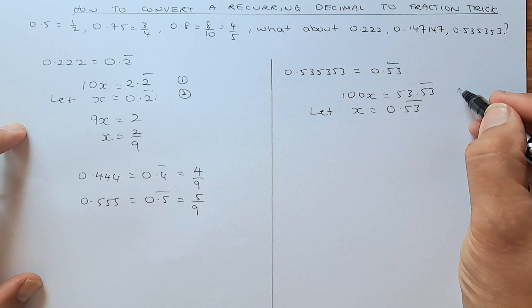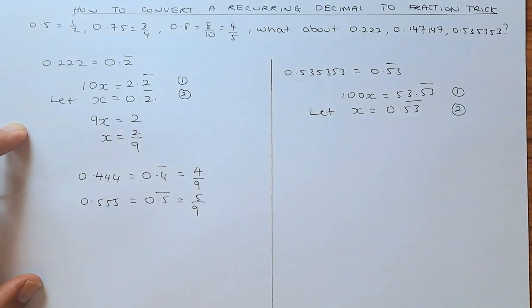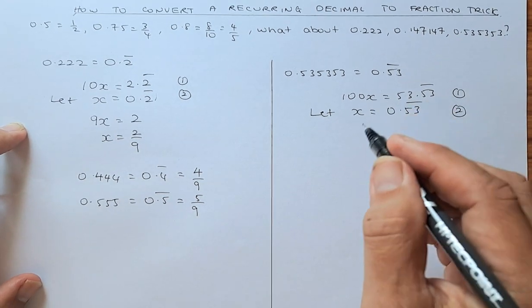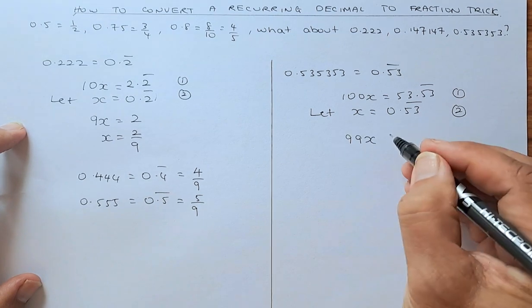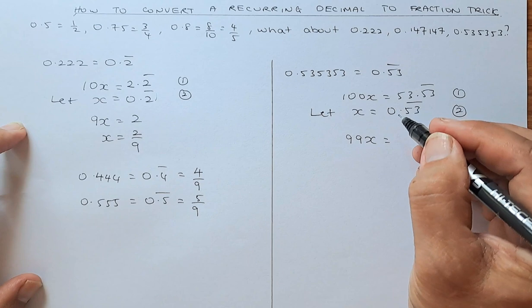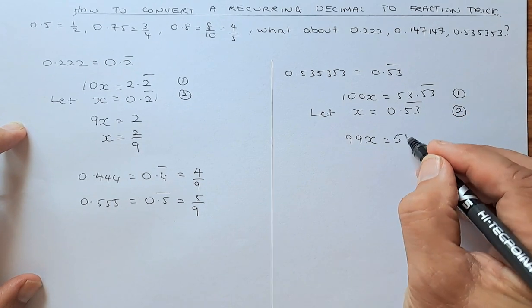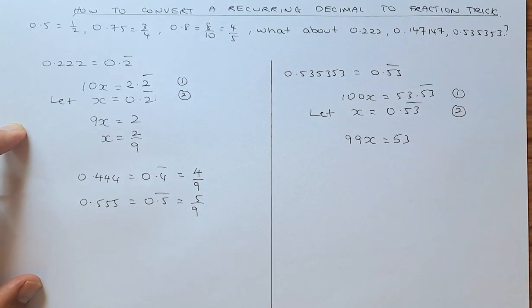That will be equation 1, and that will be equation 2, and we are going to minus equation 1 and minus equation 2. So 100x minus x is going to be 99x, and then 53.53 recurring minus 0.53 recurring, you will cancel them out.